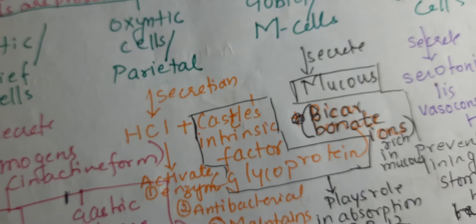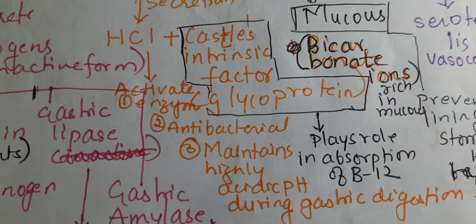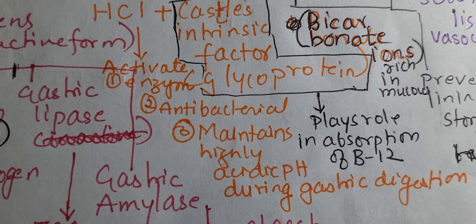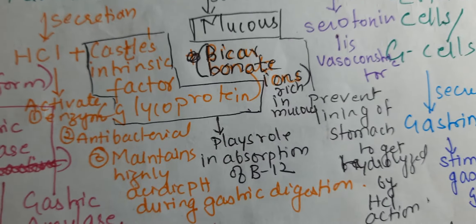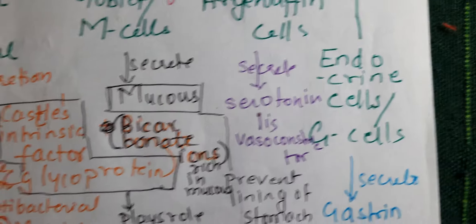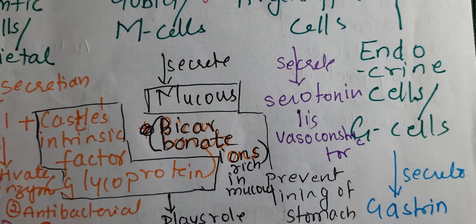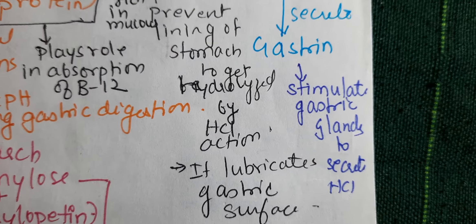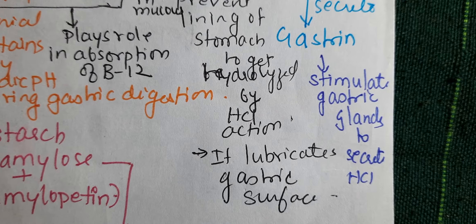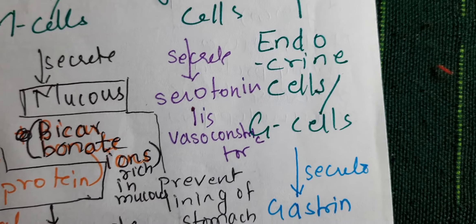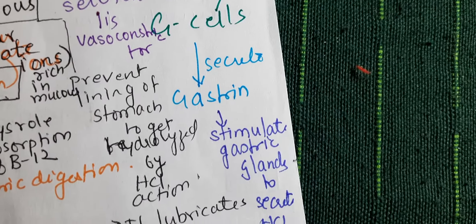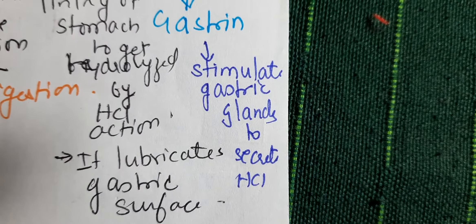Oxyntic (parietal) cells secrete HCl and Castle's intrinsic factor. Castle's intrinsic factor is a glycoprotein. HCl activates pepsinogen to pepsin, acts as an antibacterial agent, and maintains the high acidic pH during gastric digestion. Mucus cells secrete bicarbonate ions in mucus, which prevent the stomach lining from being hydrolyzed by HCl and lubricate the gastric surface. Argentaffin cells secrete serotonin, which is a vasoconstrictor. Endocrine G cells secrete the hormone gastrin and stimulate gastric glands to secrete HCl.